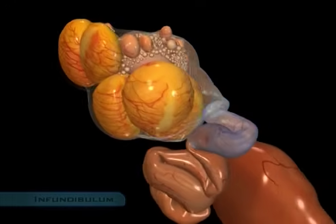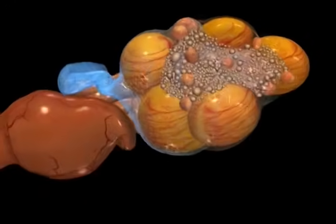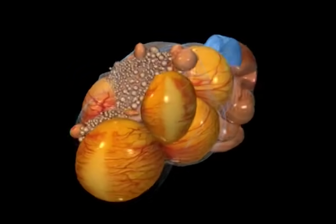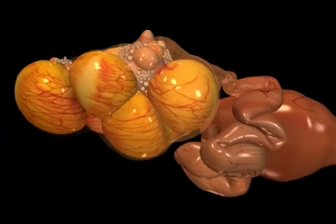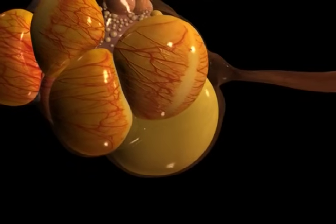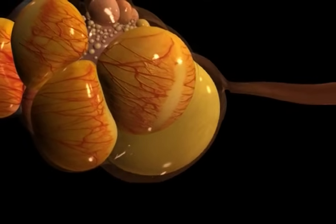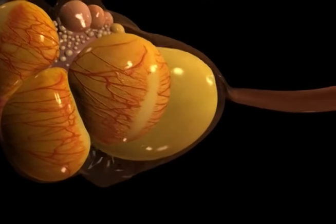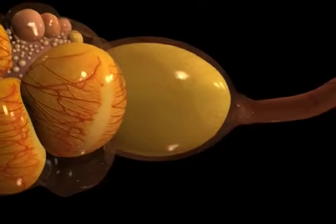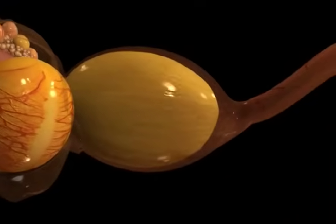Called the infundibulum, the funnel-shaped upper end of the oviduct envelops the ovary and catches the most mature follicle as it reaches maturation and ovulates. Then the yolk embarks on a 24-hour journey down the oviduct.